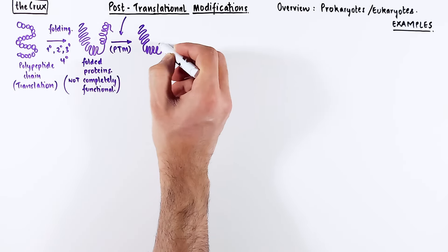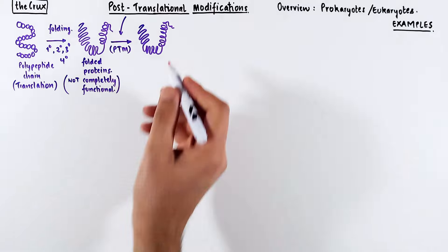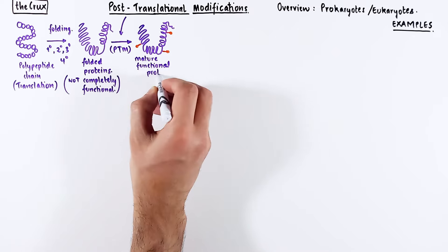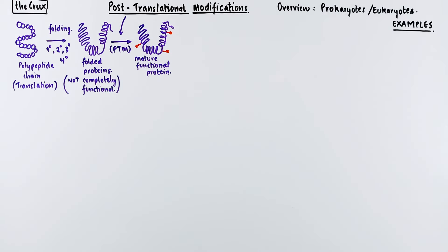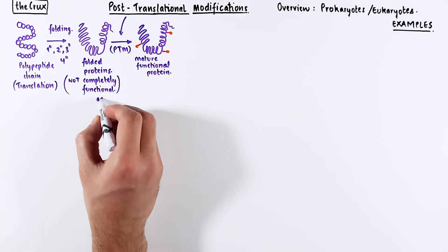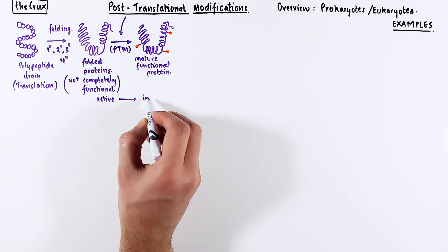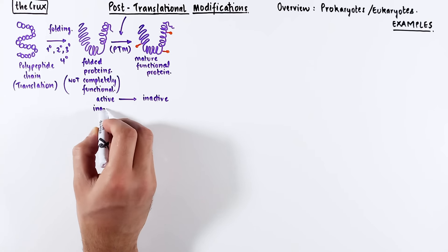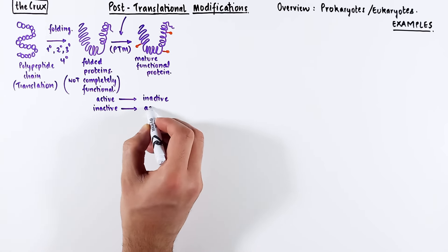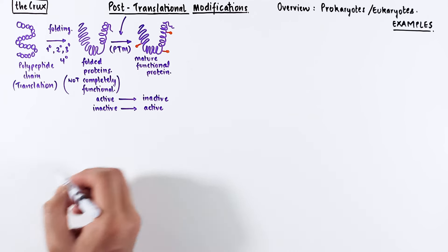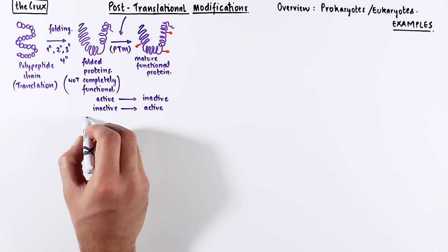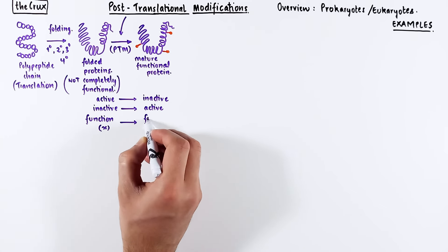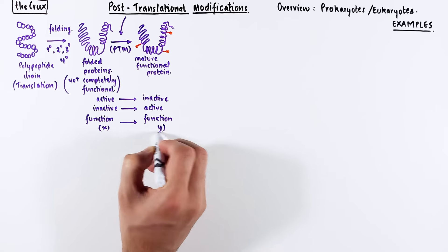There are quite a lot of these modifications that occur depending on context, and this generally causes a mature protein to form, which is usually the intended functional product. Post-translational modifications can either turn an active protein into its inactive form, or turn an inactive protein into its active form. Essentially, a protein with function X can assume a different function Y when the protein is modified.